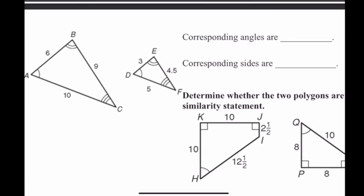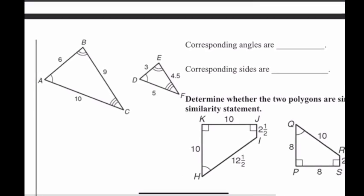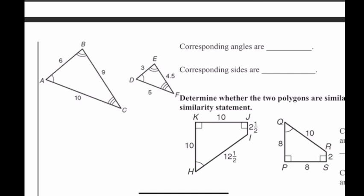Now, to determine whether two polygons are similar, we have to figure out the corresponding parts. Angle A matches with angle D, so angle A is congruent to angle D. Angle B, which has two marks, matches with angle E, which also has two marks. Finally, angle C matches with angle F, so angle C is congruent to angle F.